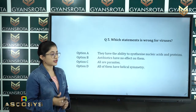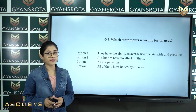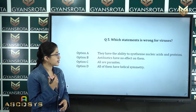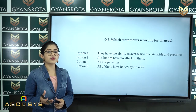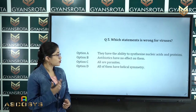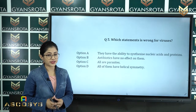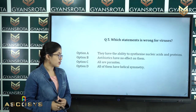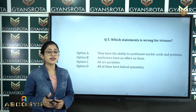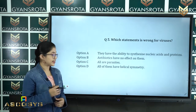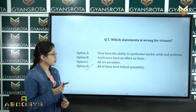Option A — they have the ability to synthesize nucleic acids and proteins — is correct. Option B — antibiotics have no effect on them — is also correct, because viruses do not have a cell wall. Option C — all are parasites — is also correct. Option D — all of them have helical symmetry — is incorrect. Therefore option D is the correct answer for this question.